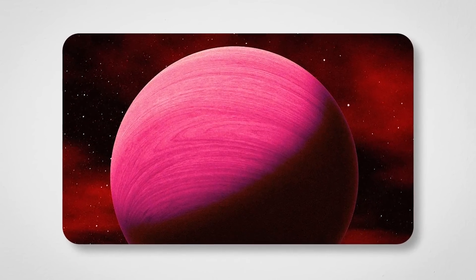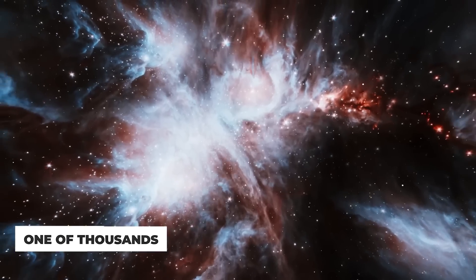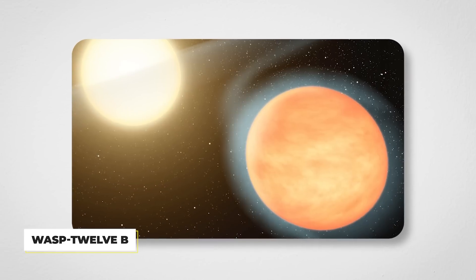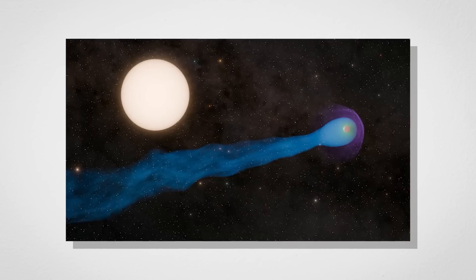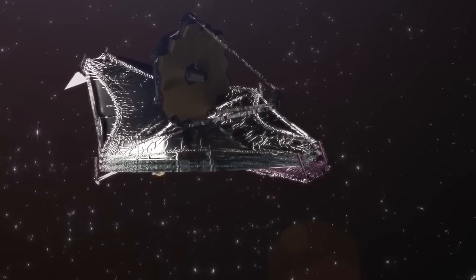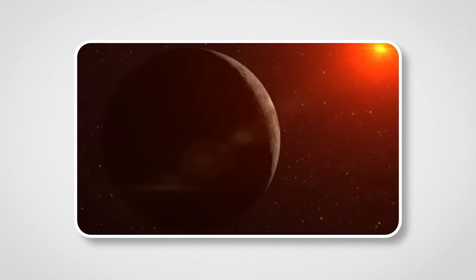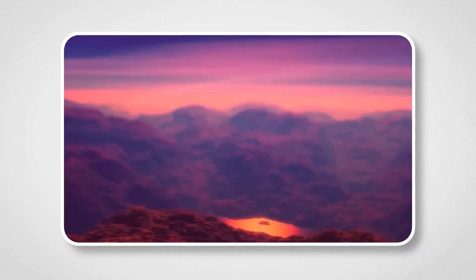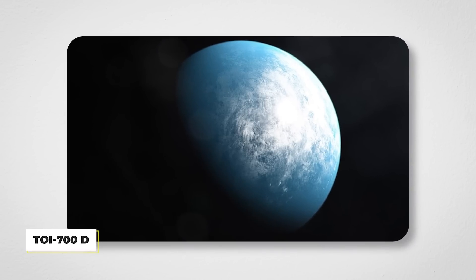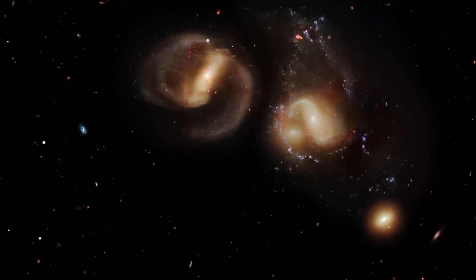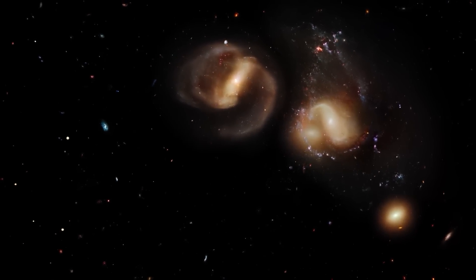Gliese 504b is just one of thousands of exoplanets we've discovered so far, and each one has its own wild story. Some are massive gas giants orbiting scorchingly close to their stars, like WASP 12b, which is so dark it's been nicknamed the black planet. Others, like Proxima Centauri b, are rocky and Earth-sized, sitting in the so-called habitable zone where liquid water might exist. And then there's TOI 700d, an Earth-like world 100 light-years away that's got scientists buzzing about its potential to support life.